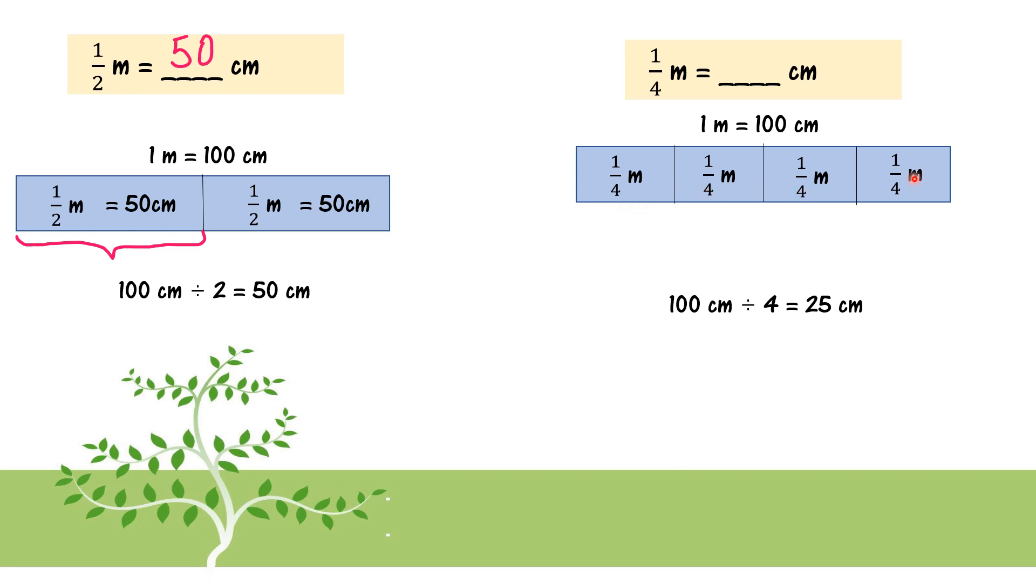1, 2, 3, 4. So I get 25, means that 1 part is 25 cm. When you total up, you will get 100 cm.